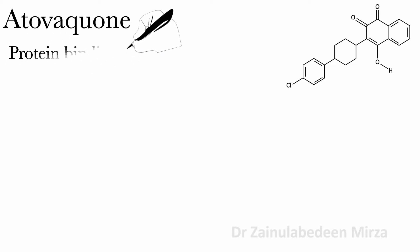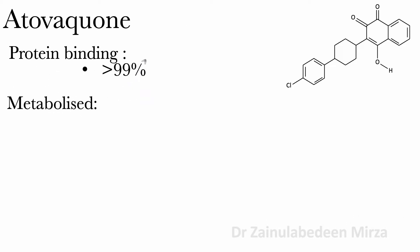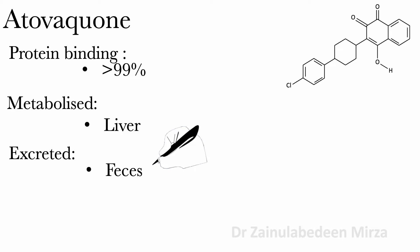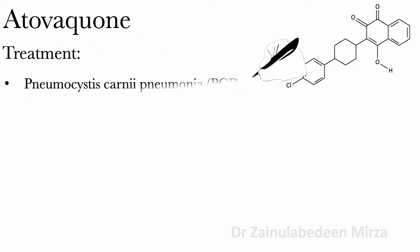Protein binding of atovaquone is more than 99%. Atovaquone is metabolized in the liver and excreted in feces. Atovaquone is used to treat Pneumocystis carinii pneumonia (PCP).